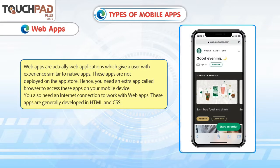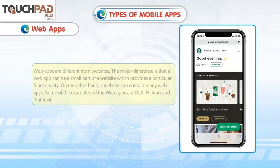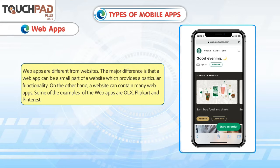Web Apps are actually web applications which give a user an experience similar to native apps. These apps are not deployed on the app store. Hence, you need an extra app called a browser to access these apps on your mobile device. You also need an internet connection to work with web apps. These apps are generally developed in HTML and CSS. Web Apps are different from websites — a web app can be a small part of a website which provides a particular functionality.